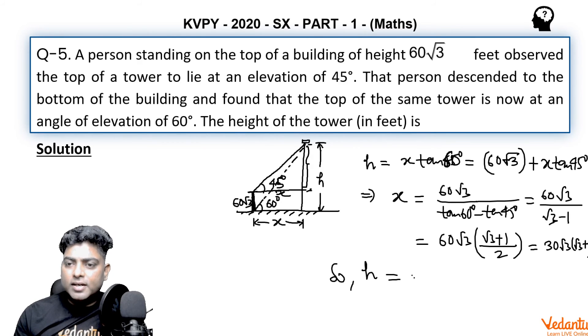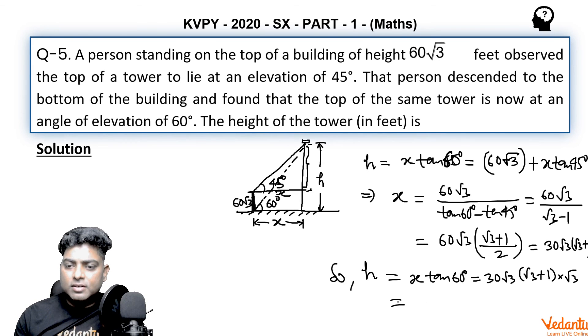Now coming to h, h would be x tan 60 degrees. x we already have as 30√3(√3 + 1) times tan 60, which is √3. Finally, the value of h is 30 times 3, which is 90(√3 + 1).